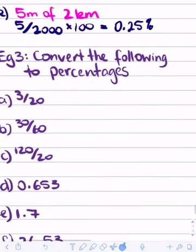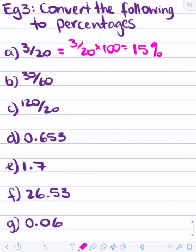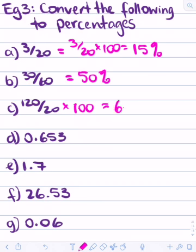Now let's convert the following to percentages — we have some fractions and some decimals. Remember, whenever you have a fraction or decimal, all you do is multiply by 100. So 3 over 20 times by 100 equals 15%. Then 30 over 60 times by 100 equals 50%. Then 120 over 20 times by 100 equals 600% — since the numerator is bigger than the denominator, the result is over 100%.